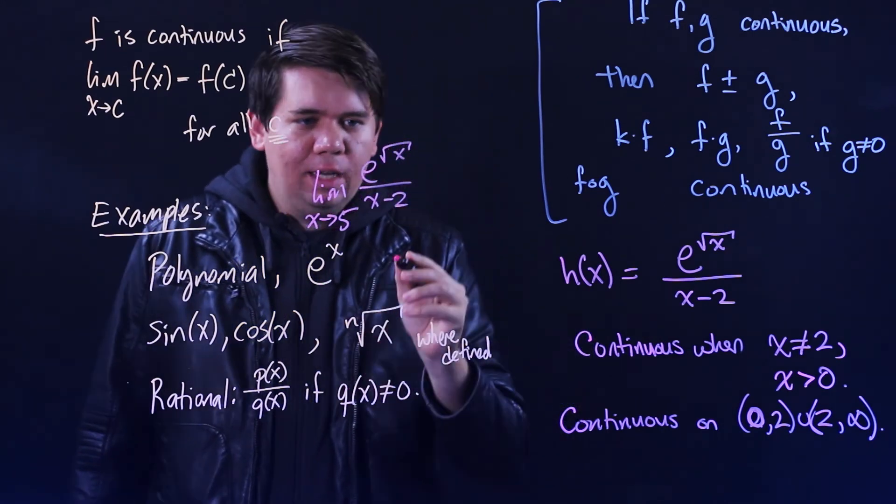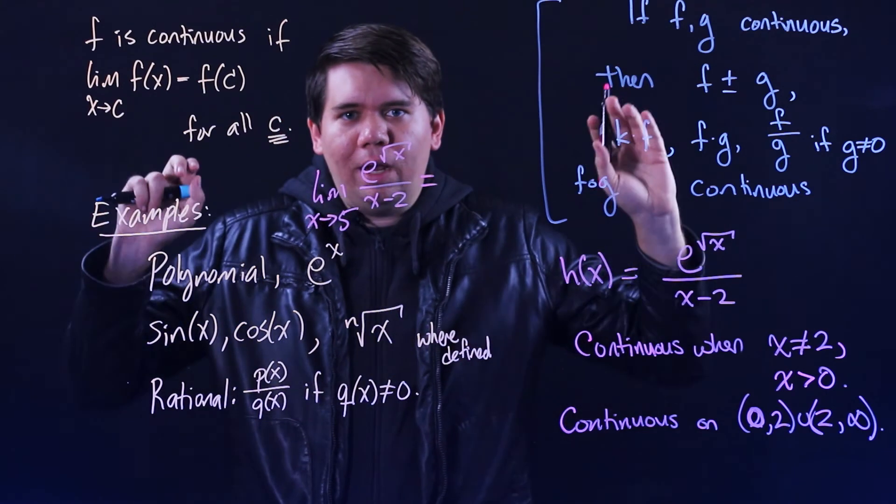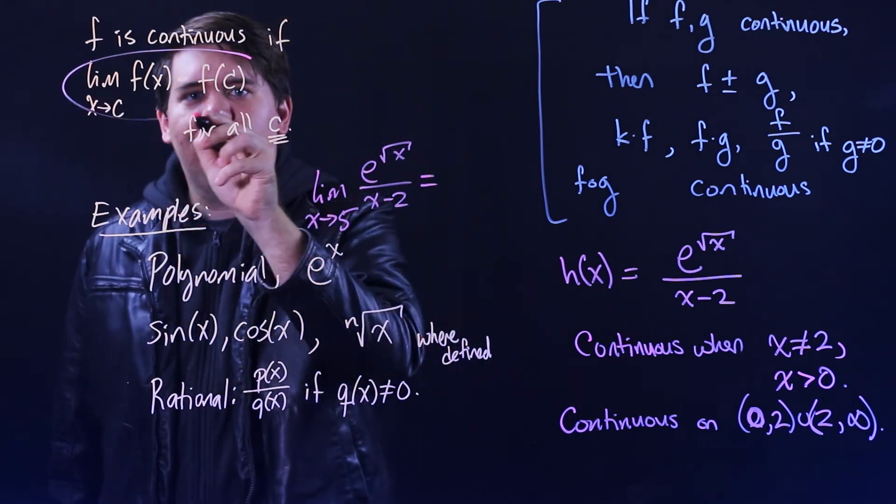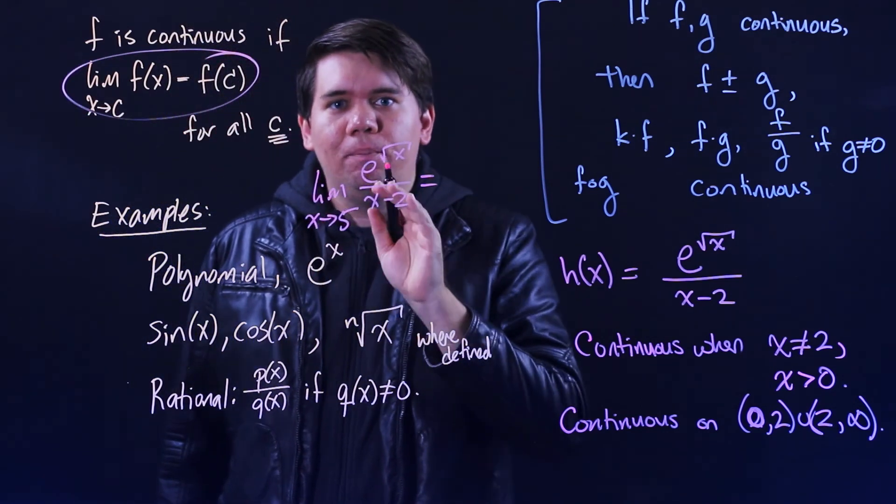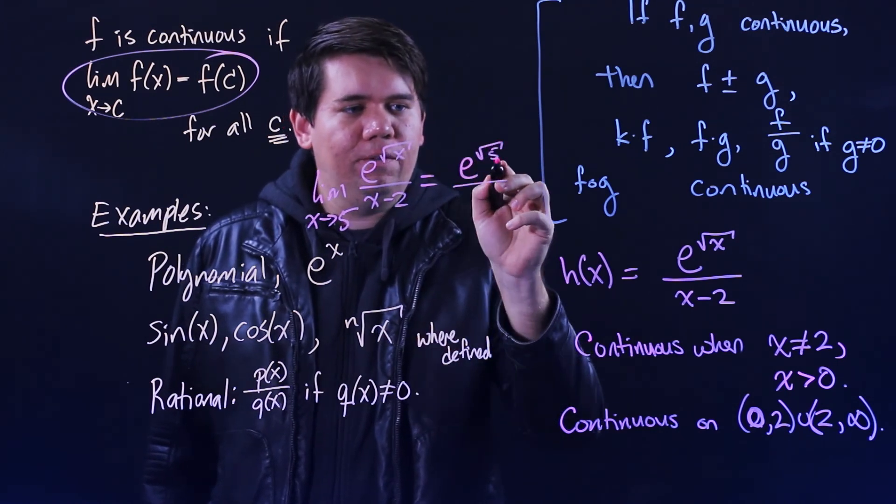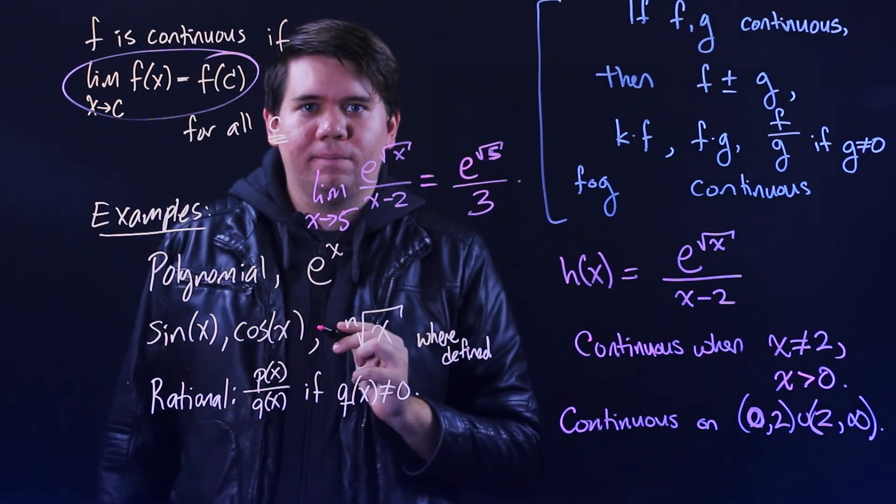e is a nice continuous function. Exponential is a nice continuous function. And so this is just a composition of continuous functions where everything is well-defined. And so this will just be what I get from plugging in 5. That's what this definition is telling me. I can just plug in here because it's a continuous function. So this just comes out to be e to the square root of 5 all over 5 minus 2, which is 3.